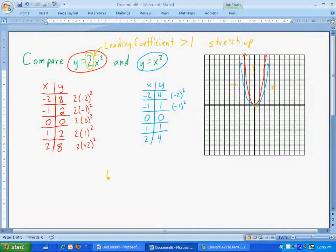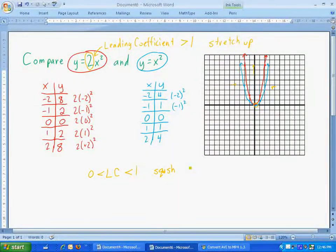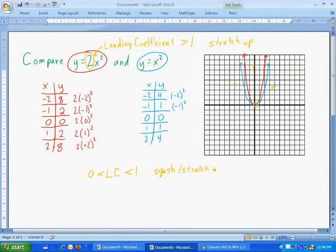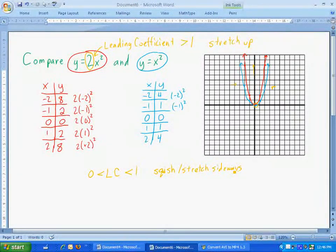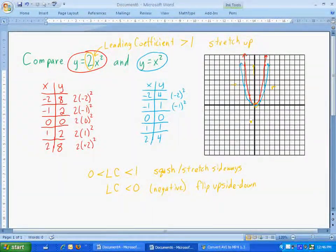A couple of different things can happen. If the leading coefficient is less than 1, but bigger than 0, meaning that it's positive, if it's less than 1, then that means that the graph is going to be squished or it's going to get stretched to the side. Or stretch sideways. And then the last thing is if the leading coefficient is negative or less than 0, that means that my graph will be flipped upside down. So if it used to be up like this, it will now be upside down and opening towards the downside. So that's our first example of graphing, and we'll do one more in just a minute.